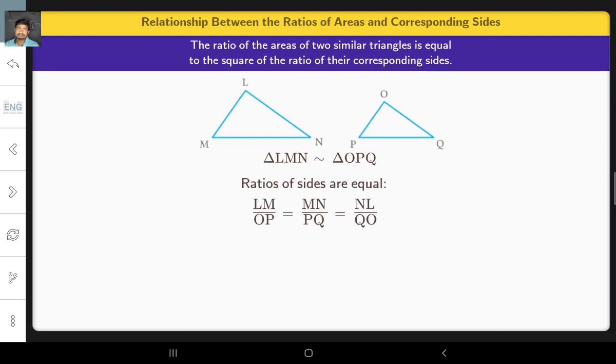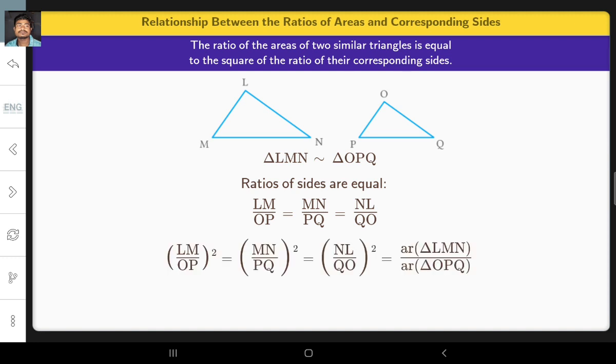So, the ratios of their sides are equal. The square of these ratios gives us the ratio of their areas. We have LM square by OP square is equal to MN square by PQ square is equal to NL square by QO square.